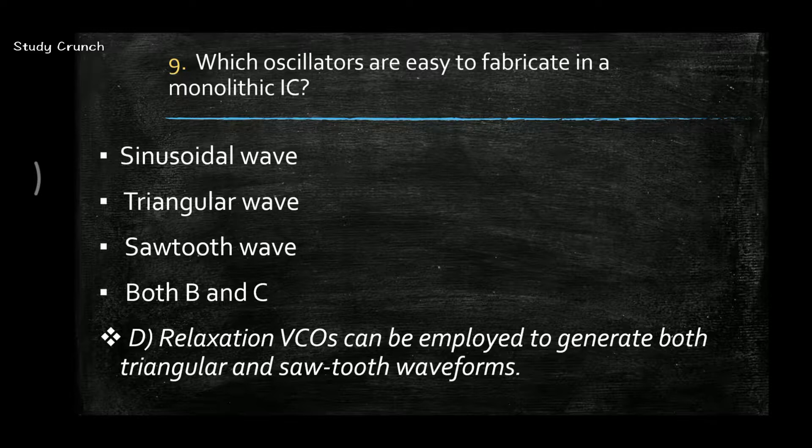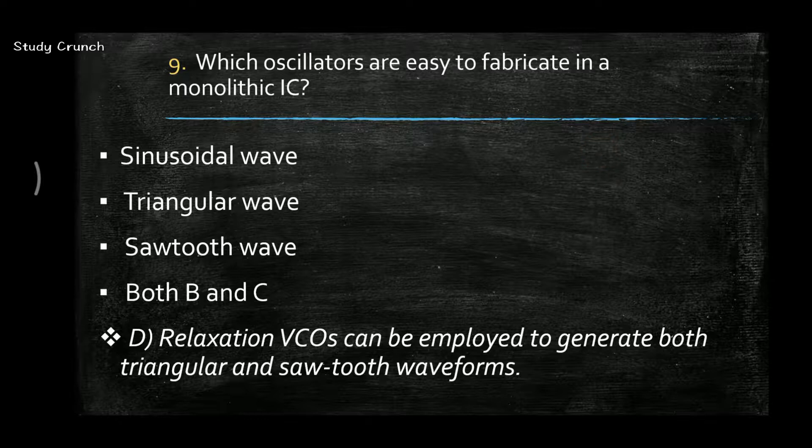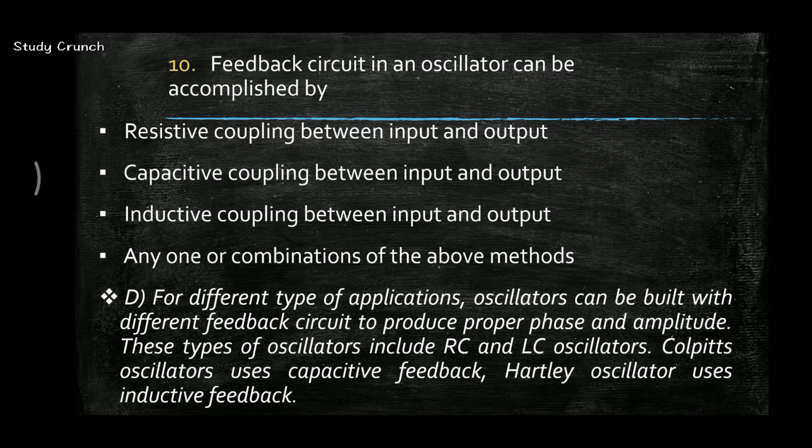Next, which oscillators are easy to fabricate in monolithic IC? The answer is D, i.e. both B and C, triangular wave and sawtooth wave. Both can be employed to generate both triangular and sawtooth waveforms.